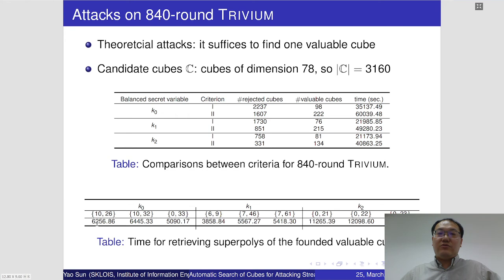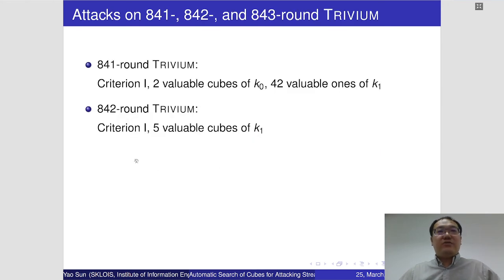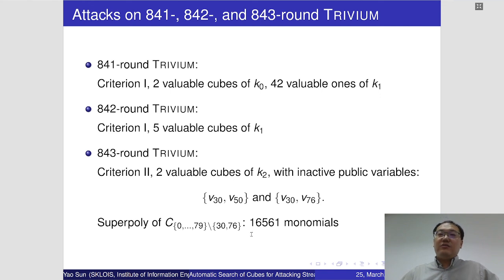The timings for retrieving the superpolys show that all timings are more than one hour. Compared with the search algorithm, we can see the search algorithm is very efficient. We also apply the search algorithm to higher rounds of Trivium — for 841 and 842 rounds, we use the first criterion. Finally, we found two valuable cubes. We recovered the superpoly of one valuable cube, and the superpoly contains more than 16,000 monomials. This leads to a theoretical attack against 843-round Trivium.